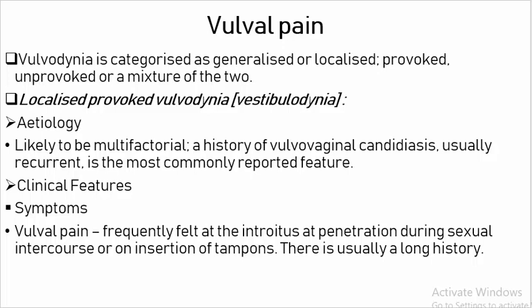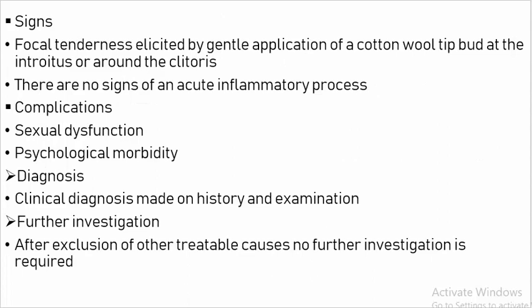Vulvodynia is characterized as generalized or localized, provoked and unprovoked, or a mixture of the two. Localized provoked vulvodynia — Etiology: Likely to be multifactorial. Clinical Features — Symptoms: Vulval pain. Signs: Focal tenderness; there is no sign of acute inflammatory process. Complications: Sexual dysfunction, psychological morbidity. Diagnosis: Clinical diagnosis made on history and examination; further investigation after exclusion of other treatable causes. No further investigation is required.